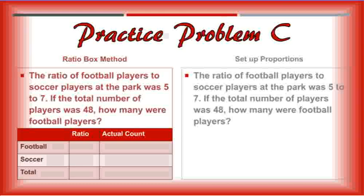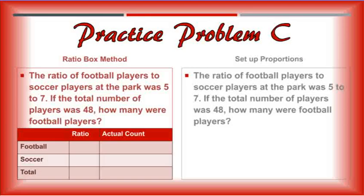And our last slide here. The ratio of football players to soccer players at the park was 5 to 7. So five football, seven to soccer, total of 12 in the ratio. If the total number of players was 48, how many were football players? So we need to find F. So I'm looking at 5 to 12 as F is 48. I know that 12 times 4 gives me 48.